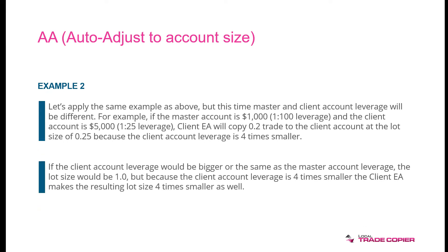Let's apply the same example but with different leverage. If the master account is $1,000 with a leverage of 1:100, and the client account is $5,000 with a leverage of 1:25 — which is four times smaller — then the client EA will copy the 0.2 lot trade to the client account at a lot size of 0.25.